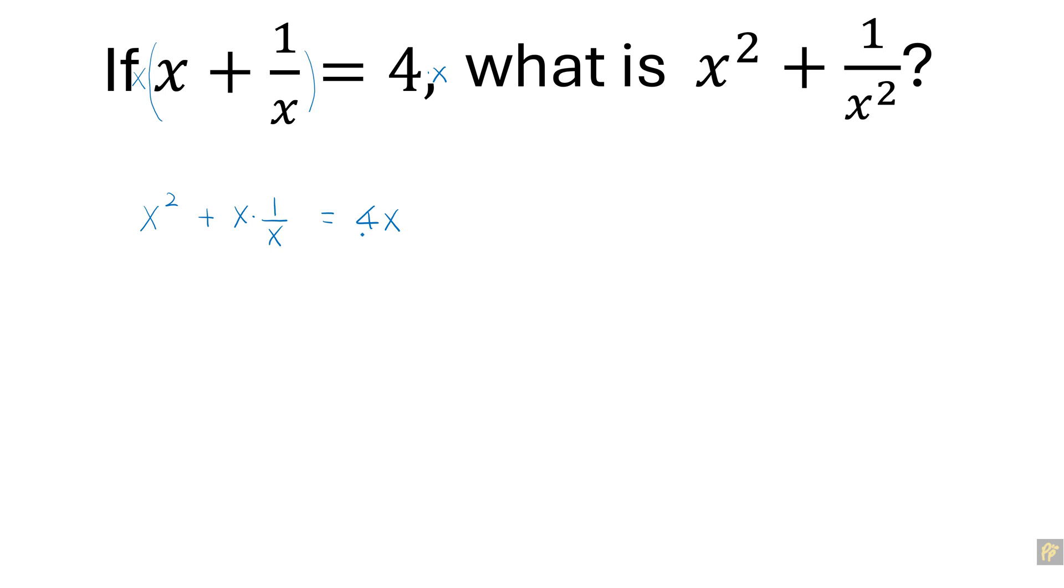When you move 4x to the left-hand side, you get x squared minus 4x plus 1 equal to 0.